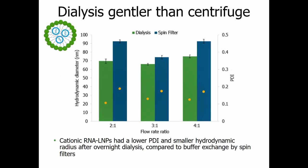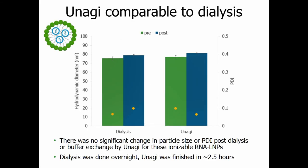LNPs are commonly processed with dialysis as a go-to technique because it's gentle and doesn't cause size changes or distribution issues — unlike spin filters. Compared to Unagi, you get that same level of gentleness. Dialysis pre and post buffer exchange results match Unagi's results. The key difference is time: if you want same-day results, Unagi is the tool for you.